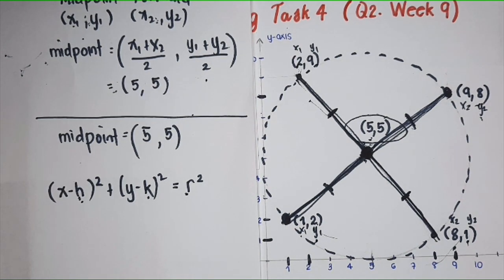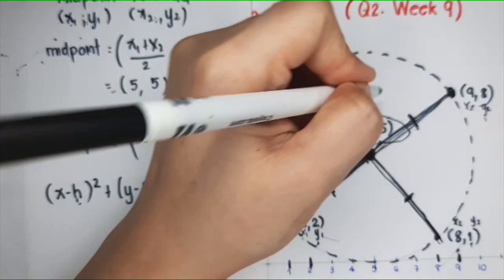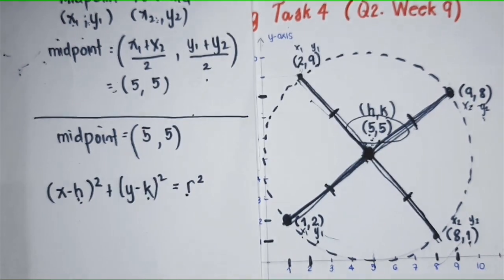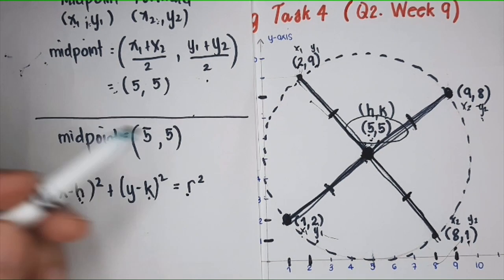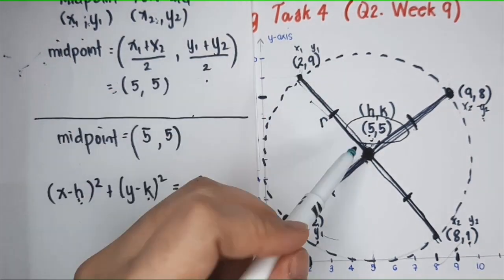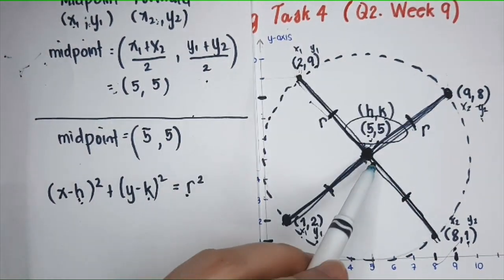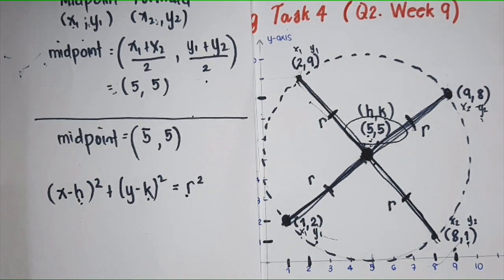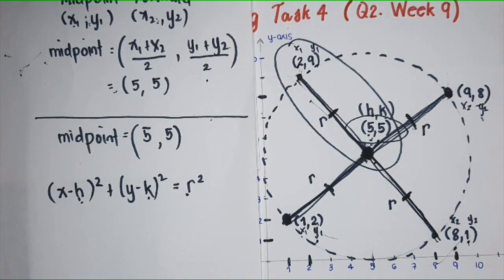We need the value for the center and the radius. I think we're okay with the center because this is the center: (5,5), right? This is the value of h and this is the value of k. Now, for the radius, you have many options. This is a radius from the center to this point. This is also a radius, and this, and this. Let's use this one to get the radius.